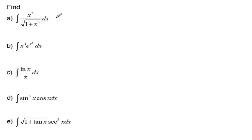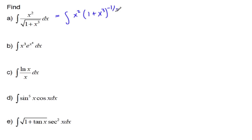We're going to rewrite this one as the integral of x squared times (1 + x³) to the negative one-half dx. This piece right here, (1 + x³) — the derivative of this is 3x².